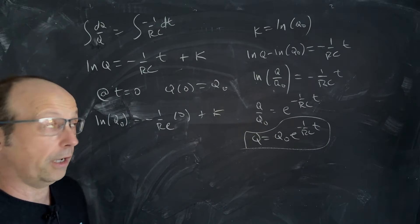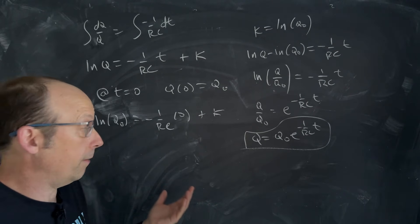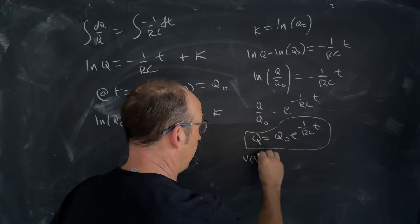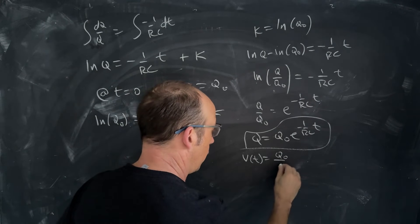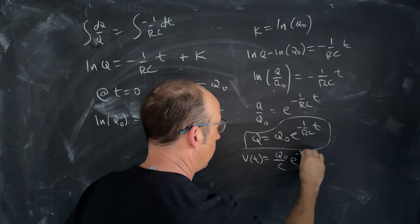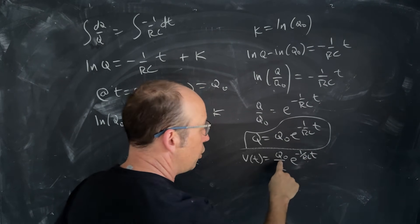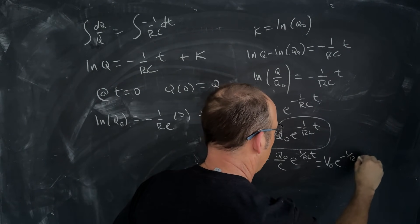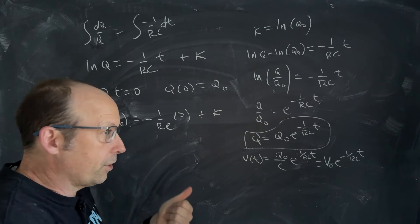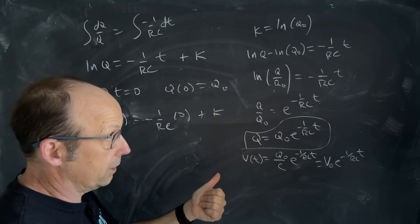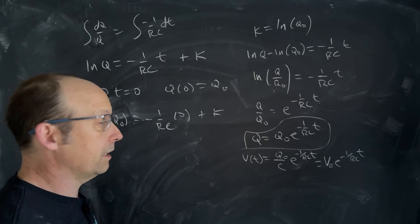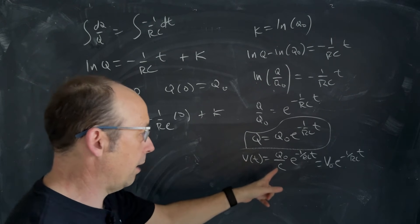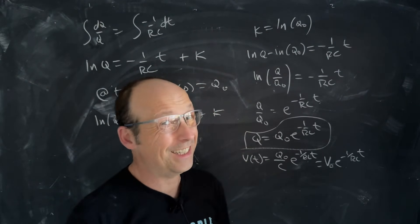Now, maybe you want to get the voltage as a function of time. Well, the voltage across the capacitor is this divided by C. So I can say V as a function of time is Q0 over C, E to the negative 1 over RC times t. And then Q0 over C is the initial voltage on the capacitor. So it's going to be V0 E to the negative 1 over RC times t. Now, what if I want the current? Well, if I know the voltage across the capacitor, that's the voltage across the resistor. So I just divide that by the resistance, and I get the current. V equals IR, so I is V over r. So you can divide that by r. So it's not so bad.